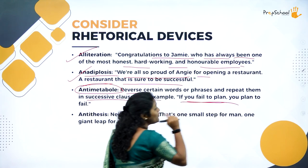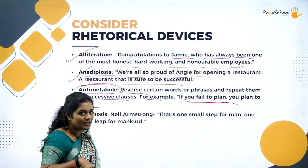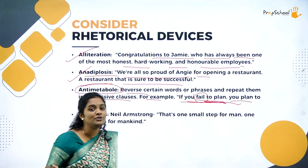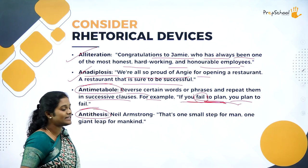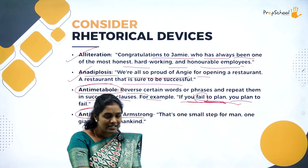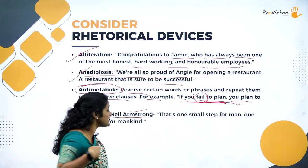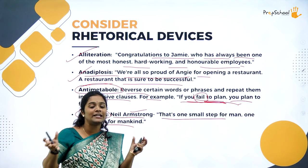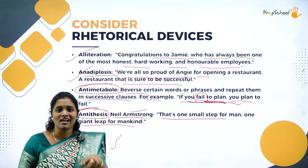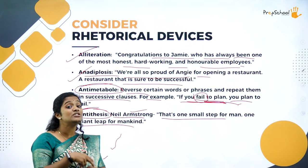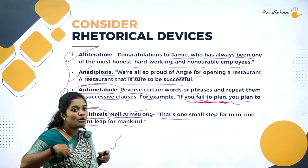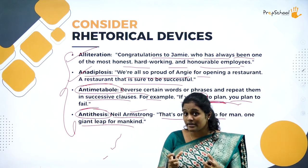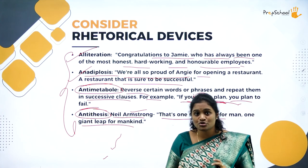There is antimetabole — reverse certain words or phrases and repeat them in successive clauses. For example: 'If you fail to plan, you plan to fail.' The confusion it creates also brings our attention to it, making us come back to understand what it means. Then antithesis — when two contrasting ideas are put together. A famous quote by Neil Armstrong: 'That's one small step for man, and a giant leap for mankind.' Small step and giant leap are two different ideas put together, like black and white or love and hate. Using these rhetorical devices makes you look very smart in your speech and debate.